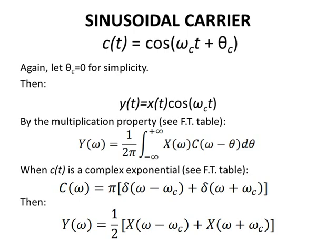By the multiplication property seen in the Fourier transform table, y of omega is equal to 1 over 2 pi times the integral from negative infinity to positive infinity of x of omega times c of omega minus theta d theta.